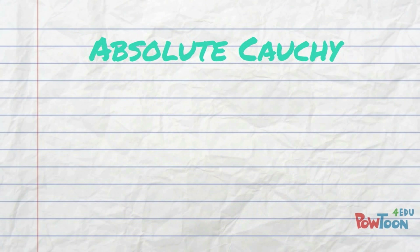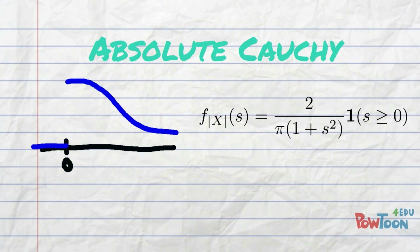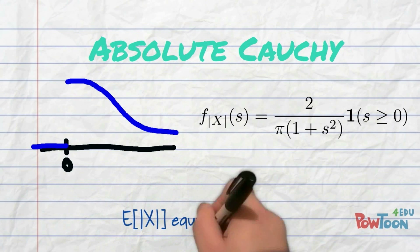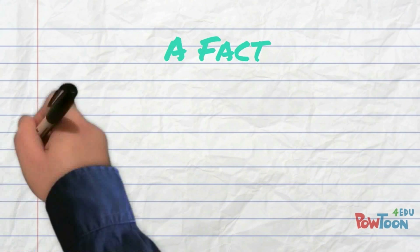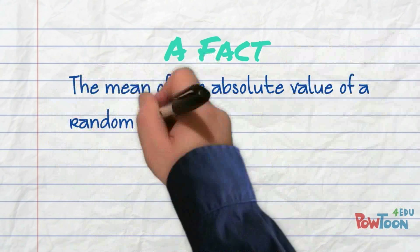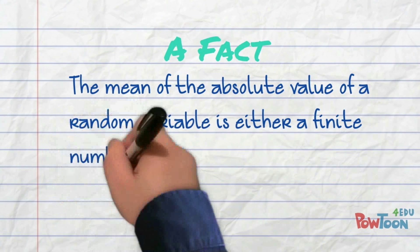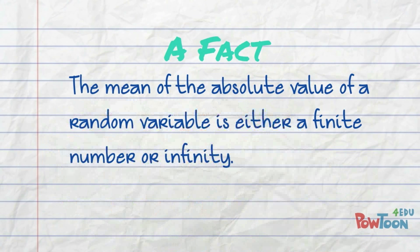What about the absolute value of a Cauchy? That's a little better, since now we have folded the left tail over to the right. Now we can say that the expected value of the absolute value of x is infinity. In fact, every random variable has the mean of the absolute value of the random variable as either a finite number or infinity.